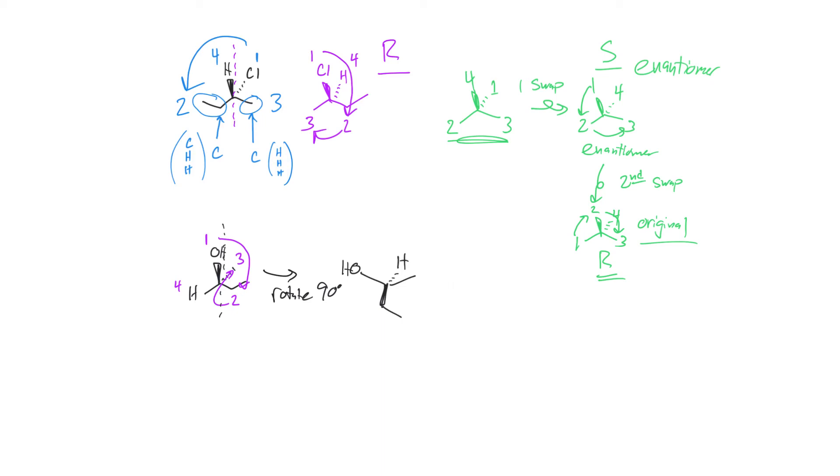I can assign the same priorities here. We know that the H is number four, the OH is number one, the methyl is three, and the ethyl is two. Now the hydrogen is pointed away from me. And I can assign one, two, three. And that would give me the S configuration.